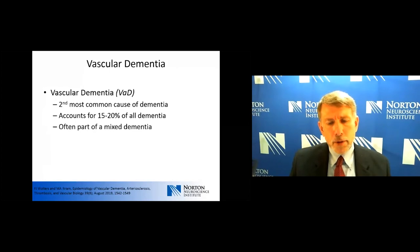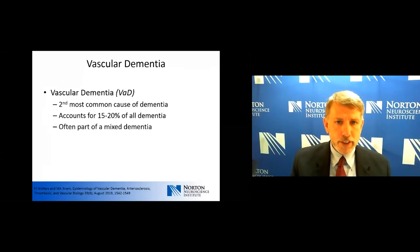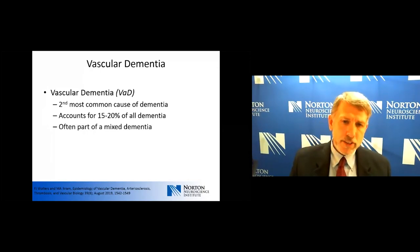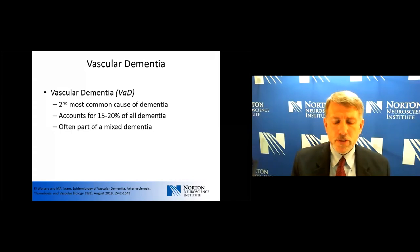By many accounts, the second most common and most important cause of dementia is vascular dementia, accounting for probably 15 to 20 percent of all causes. It's often part of a mixed dementia — for instance, we often see it in association with Alzheimer's disease.